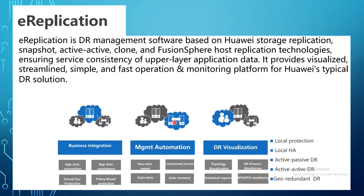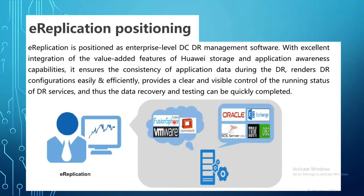E-Replication is a DR management software used to replicate data from one site to another. Unlike E-Backup which is for backups only, E-Replication handles replication of VMs and all data to a DR site. BC Manager manages this with features including business integration, automation, and DR visualization, making DR drills and planned migration simple with just a few clicks.